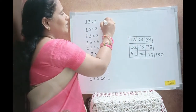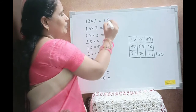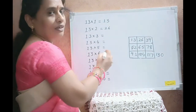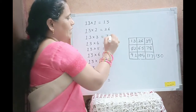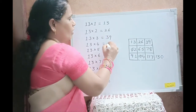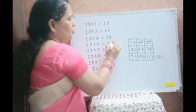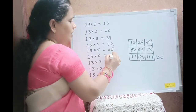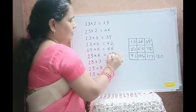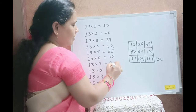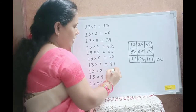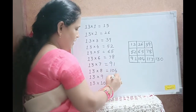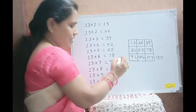13 ones are 13, 13 twos are 26, 13 threes are 39, 13 fours are 52, 13 fives are 65, 13 sixes are 78, 13 sevens are 91, 13 eights are 104, 13 nines are 117.